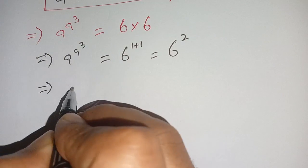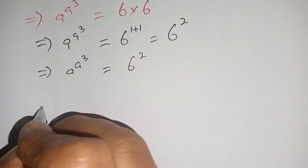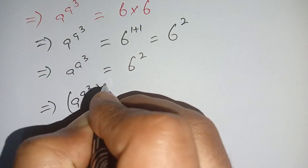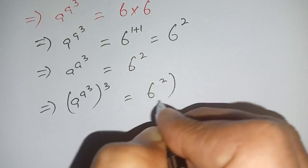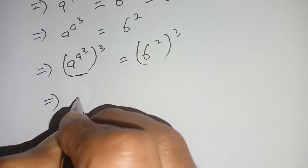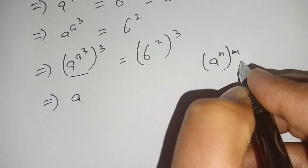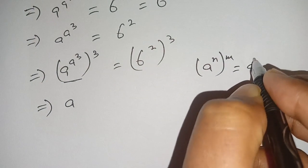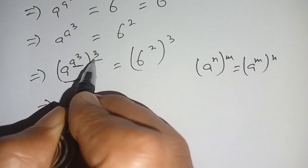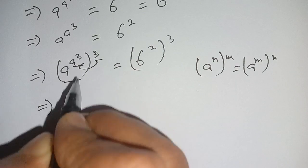So we have a power a power 3 is equal to 6 power 2. Now cubing both sides, we get a power a power 3 whole power 3 is equal to 6 power 2 power 3. On the left hand side, we know that a power n times m is equal to a power m times n, where m is a power 3. We can replace a power 3 by 3.